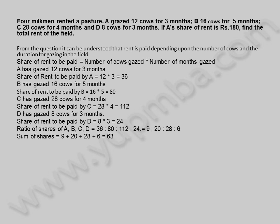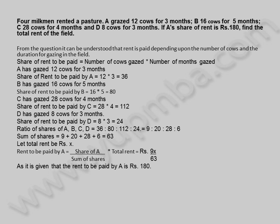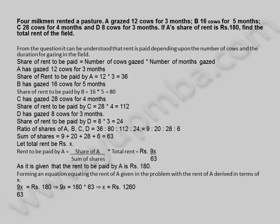Sum of shares is equal to 9 + 20 + 28 + 6 = 63. Let total rent be X rupees. Rent to be paid by A is equal to share of A divided by sum of shares multiplied by total rent, which equals 9X / 63 rupees. As it is given that the rent to be paid by A is 180 rupees, forming an equation and equating the rent of A given in the problem with the rent of A derived in terms of X: 9X / 63 = 180 rupees.